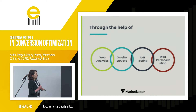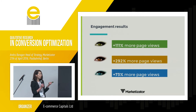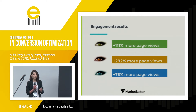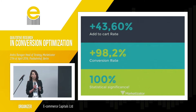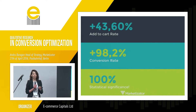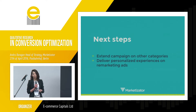Through web analytics, on-site surveys, A/B testing, and web personalization — all through our platform — we managed to increase engagement on the category pages with 111% more page views on the green eye color, 292% more page views on the brown eye color, and 73% more page views on the blue eye color. This led to an increase in KPIs of 43.6% add-to-cart rate on those specific categories and products. The conversion rate almost doubled — it increased by 98.2%, with a statistical significance of 100%. The next steps were to extend the campaign to other categories and deliver personalized experiences on remarketing ads.